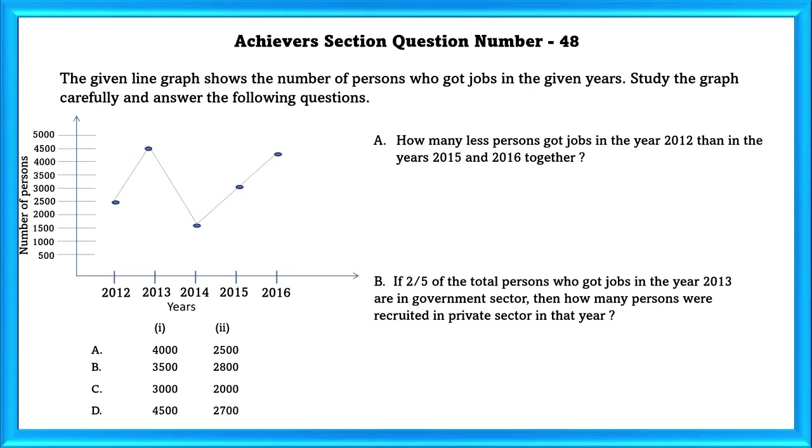Achievers Section Question No. 48: The given line graph shows the number of persons who got jobs in the given years. Study the graph carefully and answer the following questions. A: How many less persons got jobs in the year 2012 than in 2015 and 2016 together?